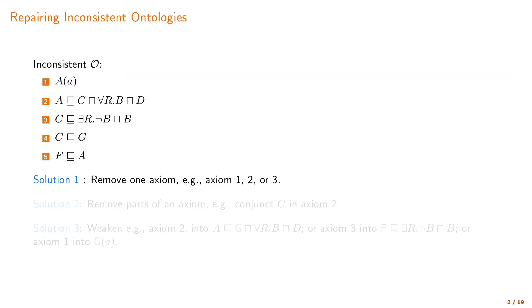Maybe we could do something a little more subtle, like removing only a part of an axiom, like just removing the C part of axiom two, so that A is not contained in C anymore and so there is no inconsistency.